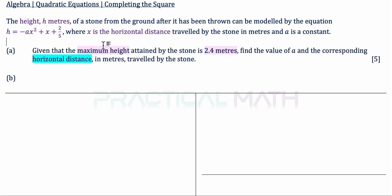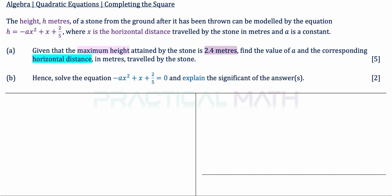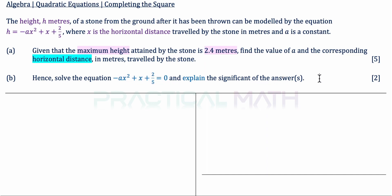In Part A, given that the maximum height attained by the stone is 2.4 meters, find the value of a and the corresponding horizontal distance in meters traveled by the stone — that is a 5-mark question. In Part B, solve the equation negative ax squared plus x plus 2 over 5 equals 0 and explain the significance of the answer — that is a 2-mark question.